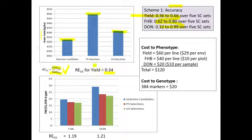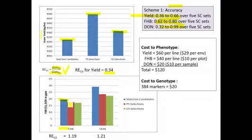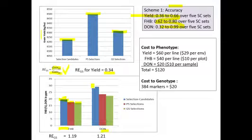Now let's look at fusarium head blight traits. Here again is the phenotype of the selection candidates, about 20%. The lines selected based on phenotypic selection are lower, which is what you want — lower values mean less disease. For genomic selection, the average phenotype of those lines was even lower than what you got for phenotypic selection. For toxin levels, we saw the same trend: the unselected candidates had the most toxin, phenotypic selection effectively reduced toxin, and genomic selection was even more effective at reducing toxin levels than phenotypic selection.